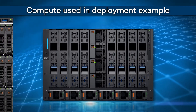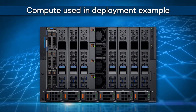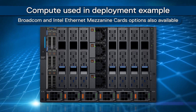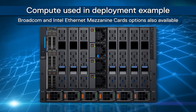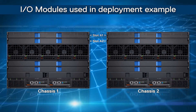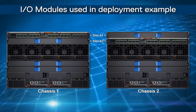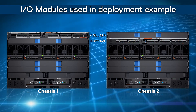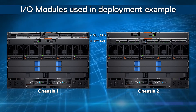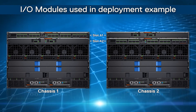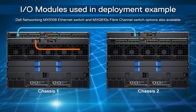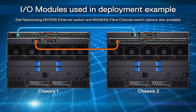In this deployment example, we use the Dell PowerEdge MX750C containing a single Q-Logic mezzanine card. In fabric slots A1 and A2, two MX9116N fabric switching engines, one in each chassis, and two MX7116N fabric expander modules, one in each chassis. The scalable fabric dual chassis topology is connected as shown in the diagram.